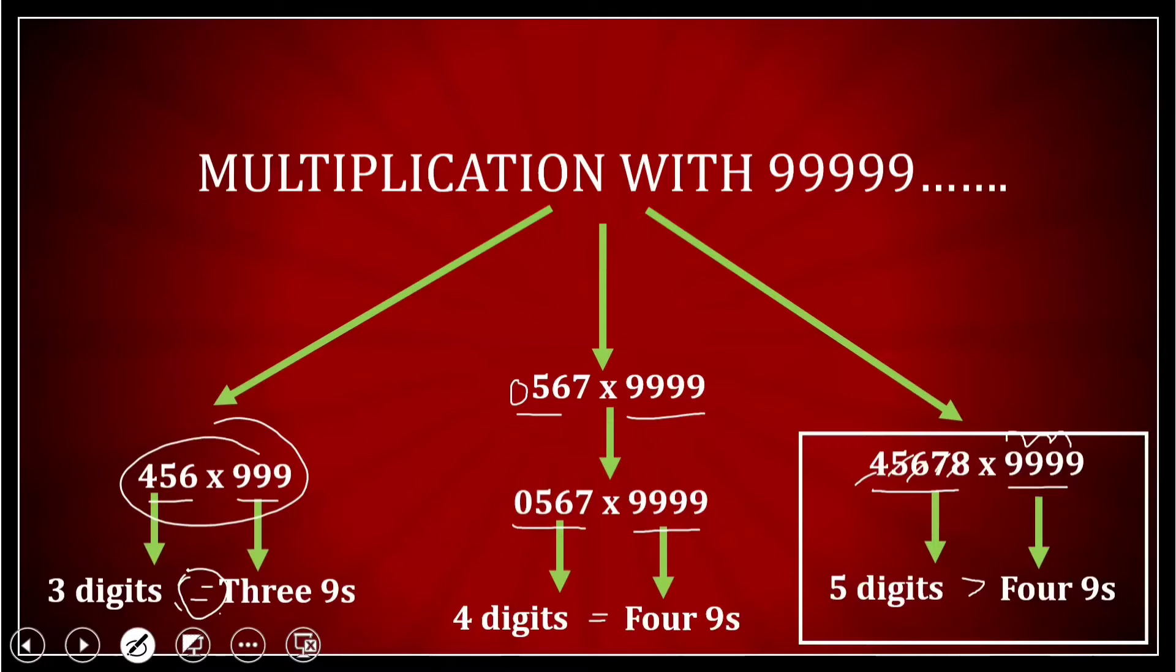So I'll be taking up the third case now, where the number of digits of the multiplier are more than the number of 9s that I am multiplying to. Let us recall type 1 and 2.